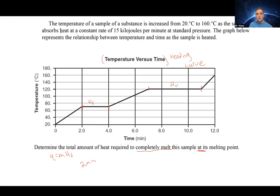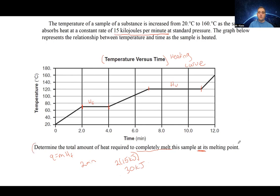The question states heat is absorbed at a constant rate of 15 kilojoules per minute. Don't overcomplicate it: two minutes times 15 kilojoules per minute equals 30 kilojoules total. That's the total amount of heat for the phase change. This is why it's important to read your axes, read your prompts, and read your question — especially on the Regents exam.